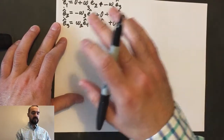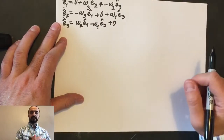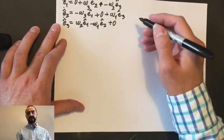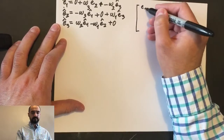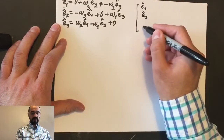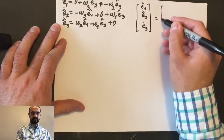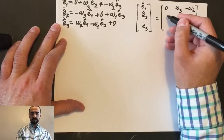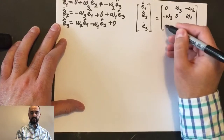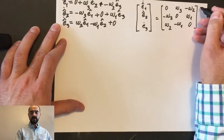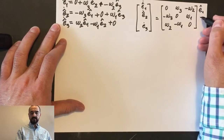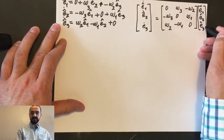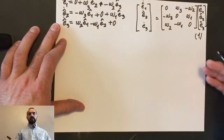We said that we're going to use the time rate of change of body-attached unit vectors to compute velocity. If we express this in matrix form, we get [e1_hat_dot, e2_hat_dot, e3_hat_dot] equal to a matrix with entries [0, omega_3, -omega_2; -omega_3, 0, omega_1; omega_2, -omega_1, 0] multiplying [e1_hat, e2_hat, e3_hat]. The dots are on the left-hand side. Let's call this Equation 1.